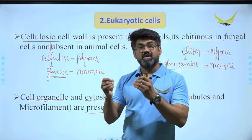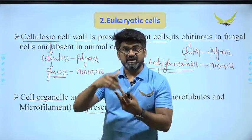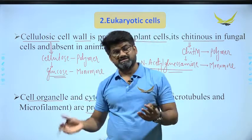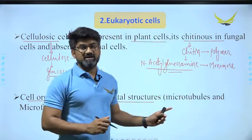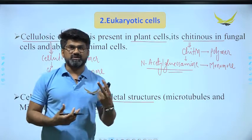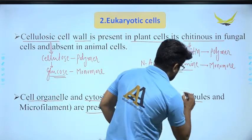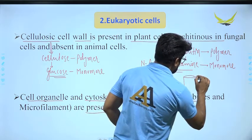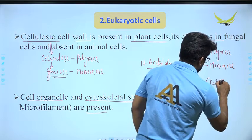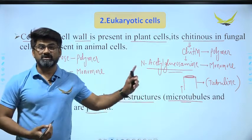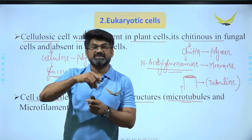The next feature of eukaryotic cells is that cell organelles and cytoskeleton structures are present. Cell organelles include membrane-bound organelles. The cytoskeleton is made up mainly of two things: microtubules and microfilaments. Microtubules are hollow structures made up of tubulin protein — whenever you see the word 'tubule,' it is a hollow structure with a lumen inside.